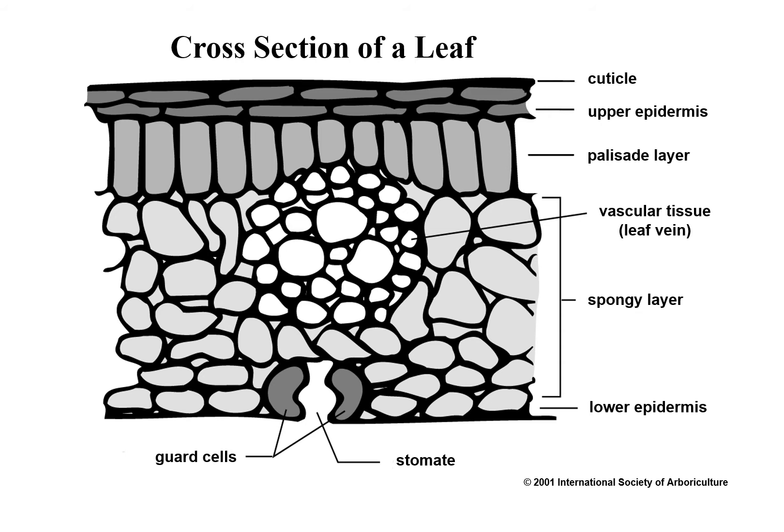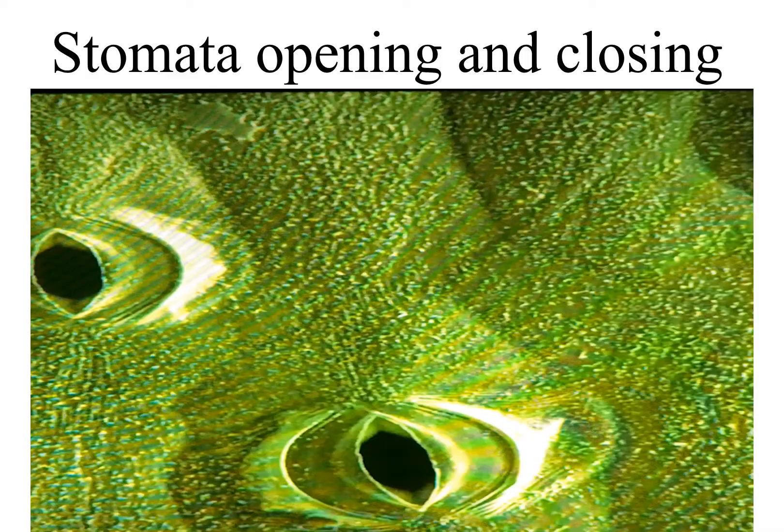This graphic shows the cross section of a leaf. The cuticle is discussed—a thick cuticle example may be that of a rhododendron. At the bottom of the slide are the guard cells and stomate. When water is deficient, the stomate close via the guard cell to reduce the loss of water through transpiration. Photosynthesis slows down and the visible symptom you may see is wilting. Stomata are also the opening through which the tree absorbs carbon dioxide and releases oxygen.